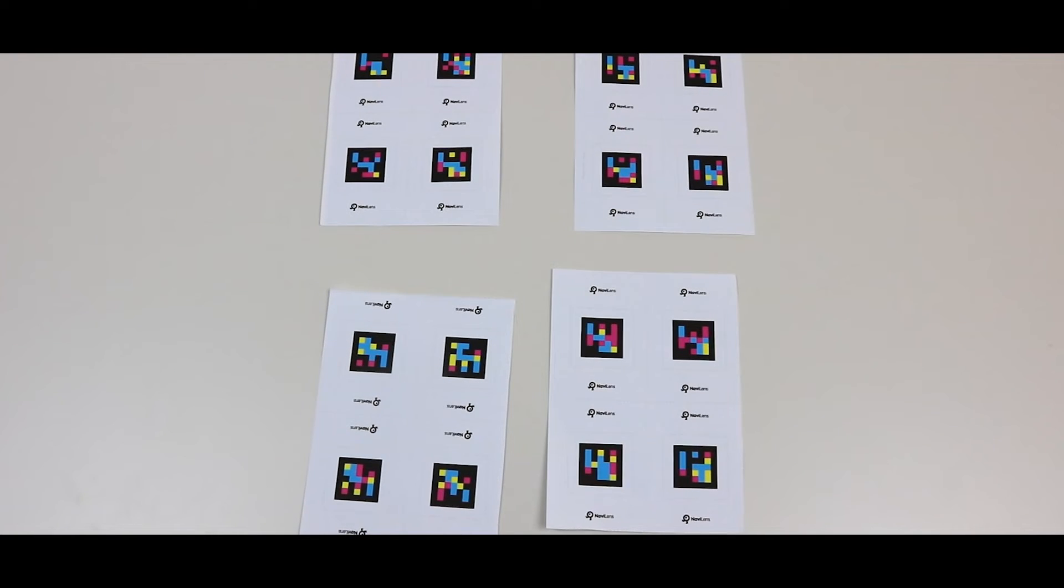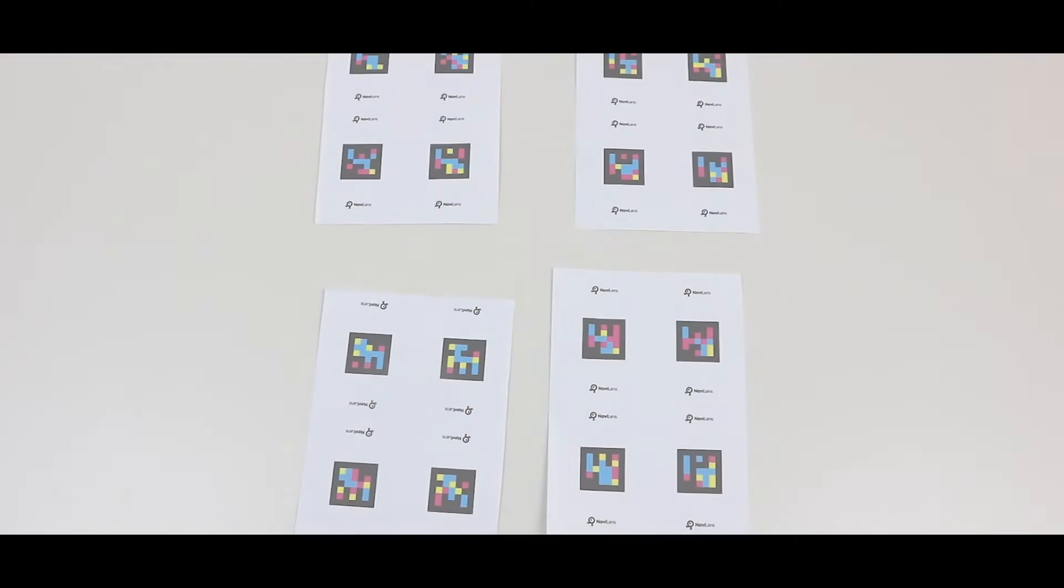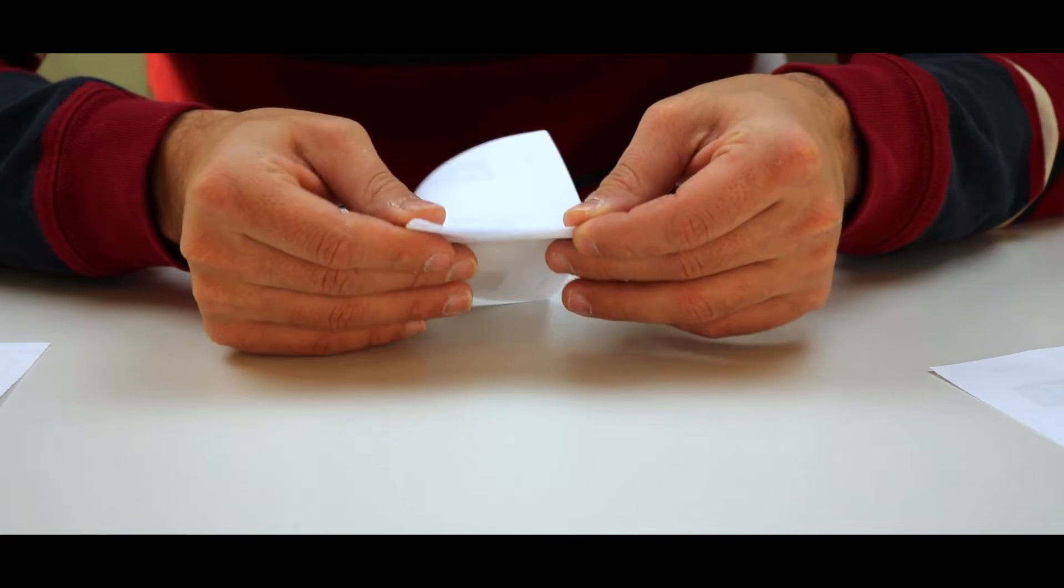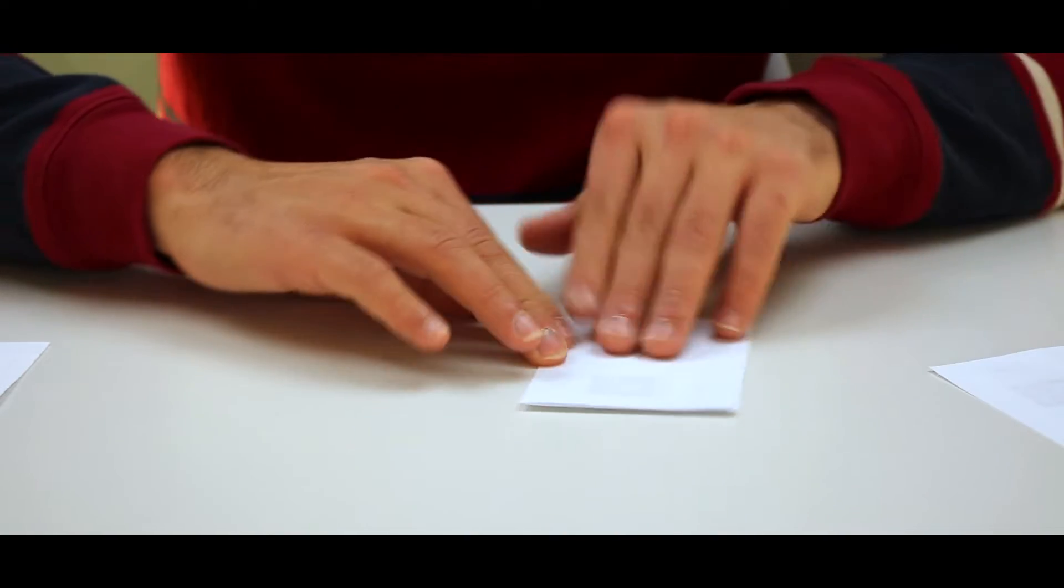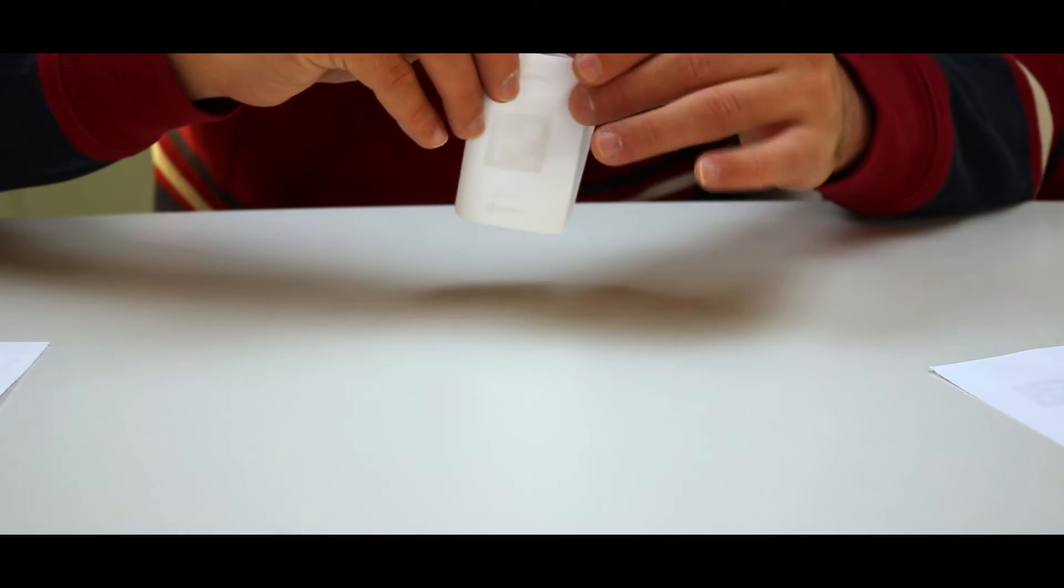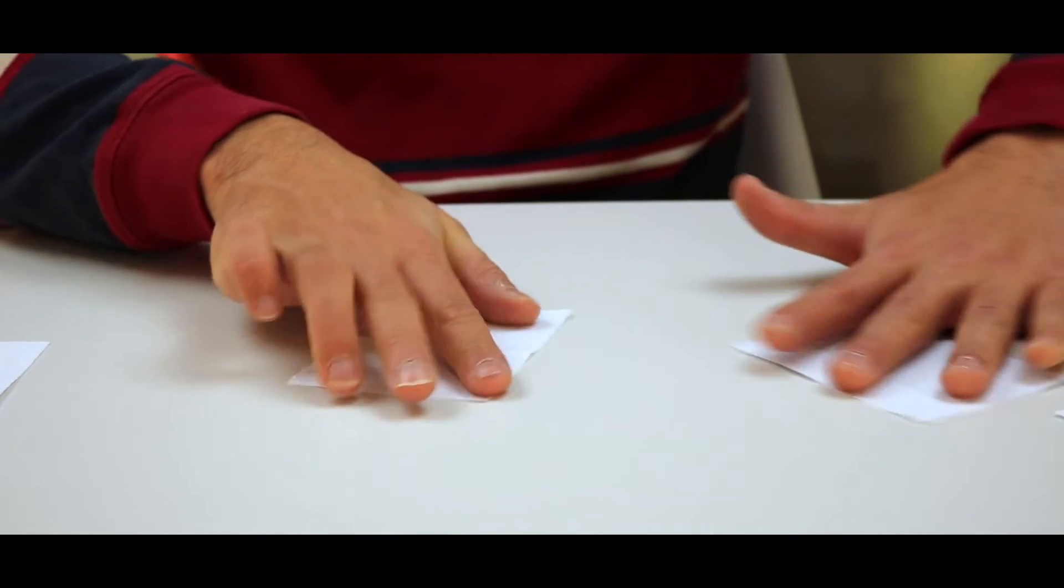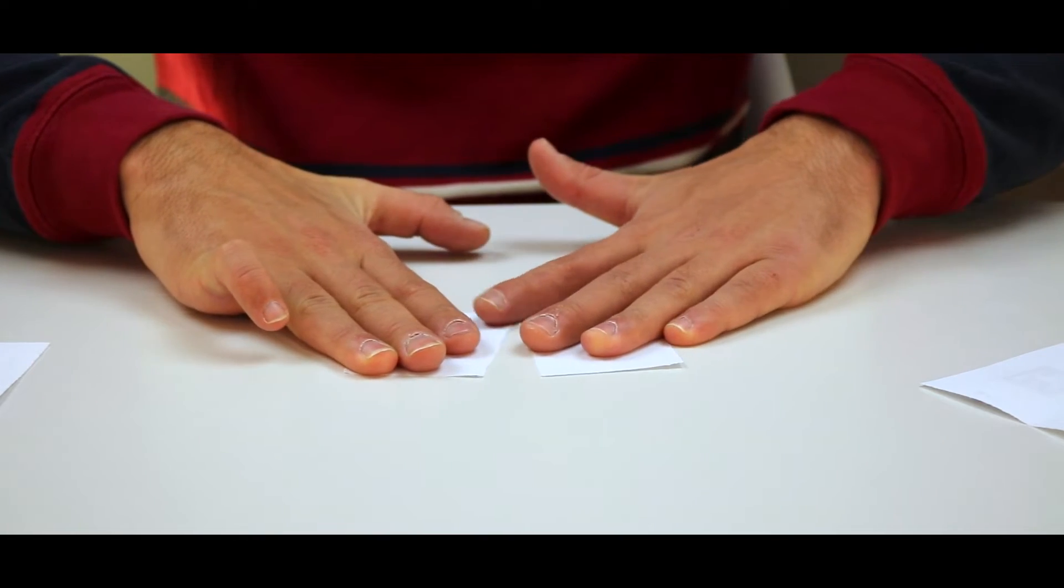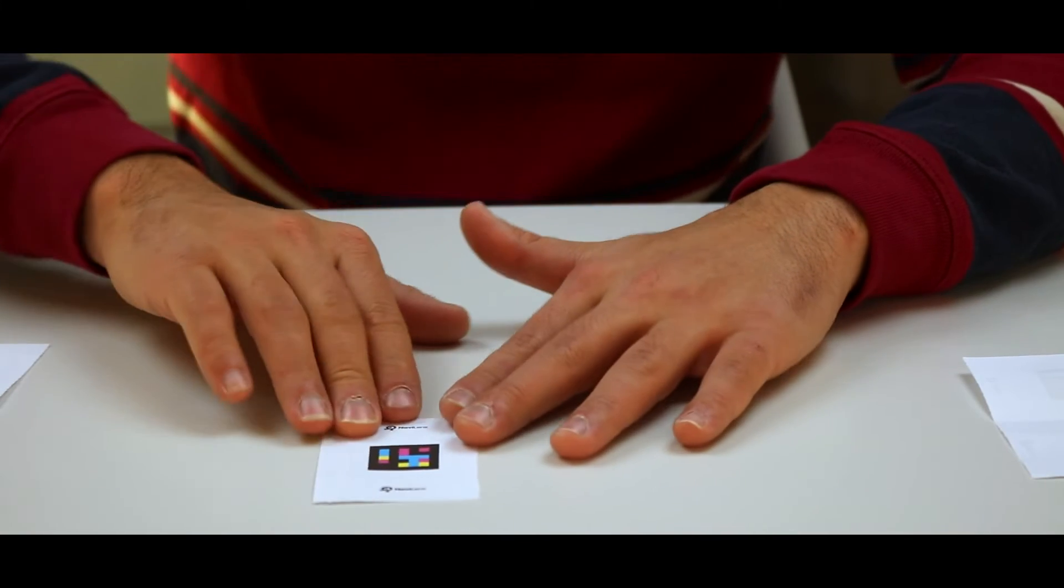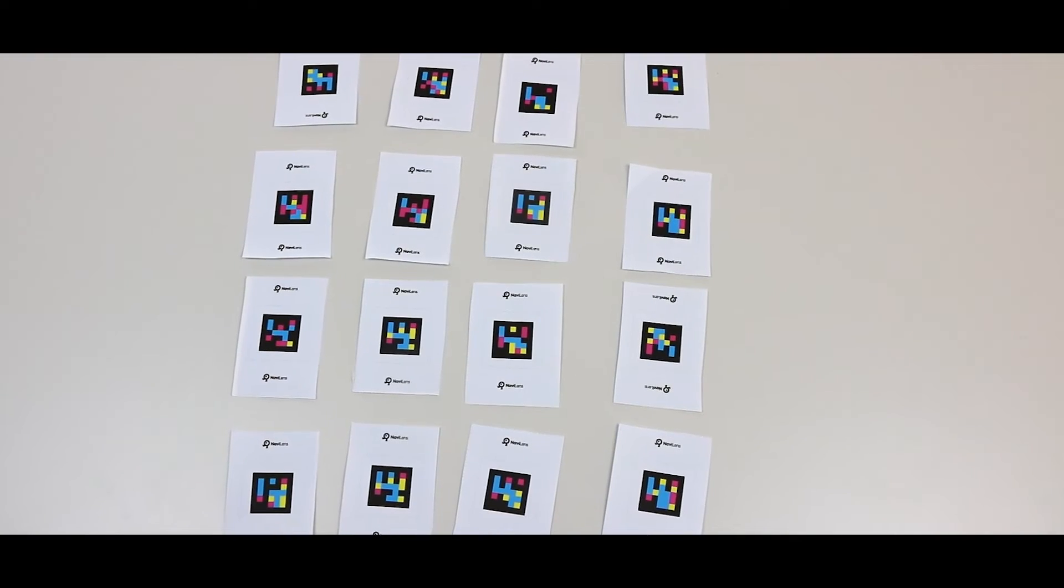Perfect. Now once you have your four pieces of paper, you need to take each one, fold it again and tear it into four pieces once again. Now you have your 16 codes.